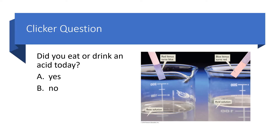In face-to-face classes, I like to start this topic by asking the class: did you eat or drink an acid today? Lots of people look very uncomfortable with this thought that they could have consumed acid. But the bottom line is that many, many of the foods that we consume contain acids. If there's any tartness whatsoever — orange juice, soda, any kind of fruit, coffee, tea — you'll be drinking something that's acidic.